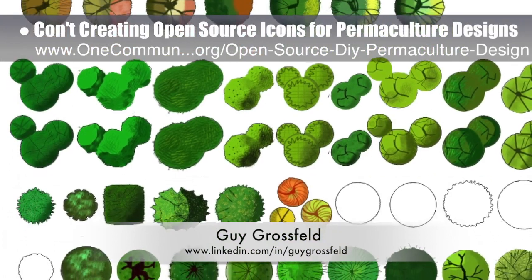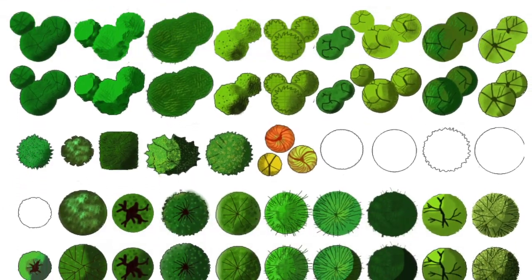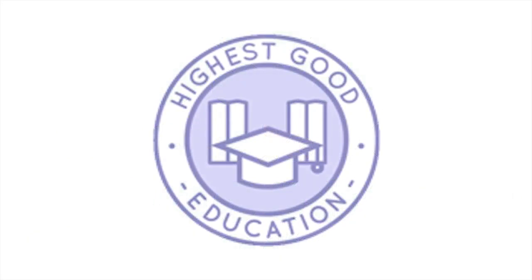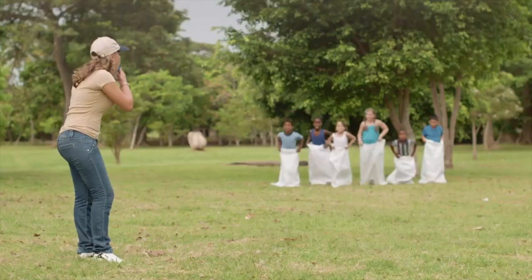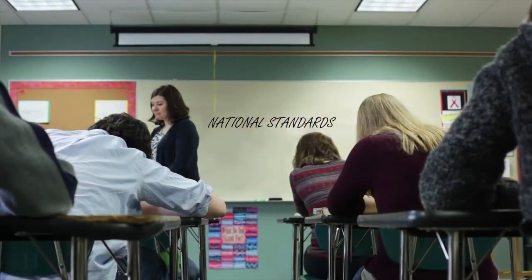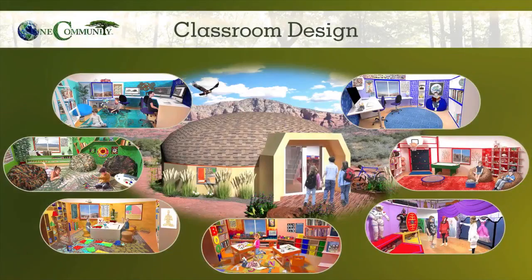Guy Grossfeld, graphic designer, completed his third week working on creating an open source icon and symbol set for our permaculture designs — you can see the icons created so far here. One Community's approach to highest good education is designed for all age groups, adaptable to any schooling environment, inspiring and fun for all participants, and includes national standards, all subjects, lesson plans, teaching strategies, learning strategies and tools, classroom design, and more.